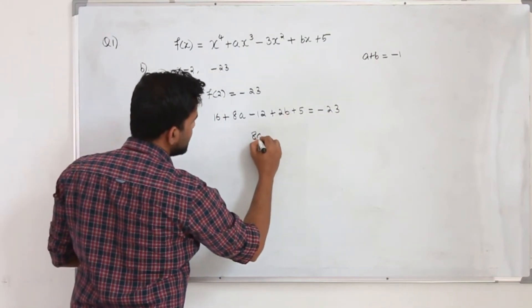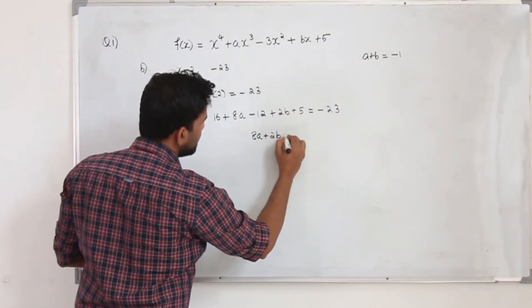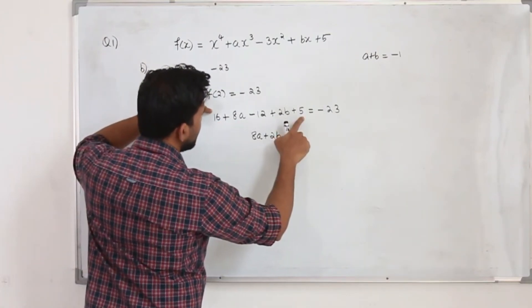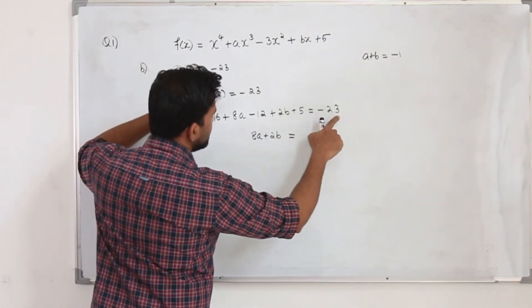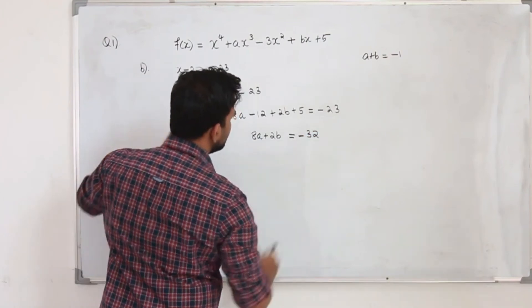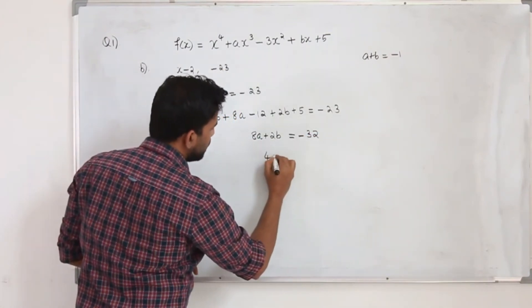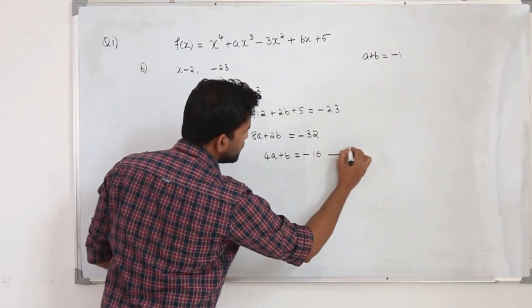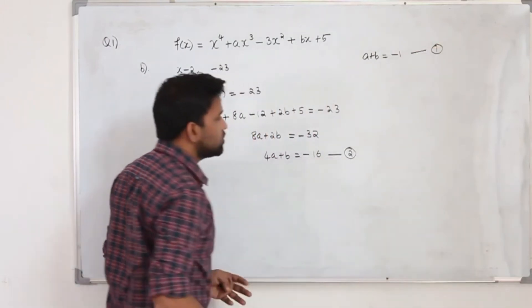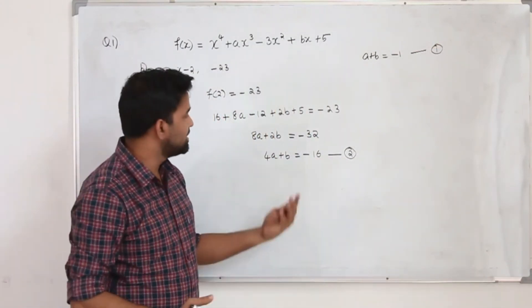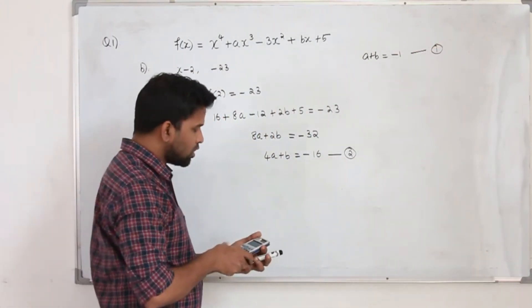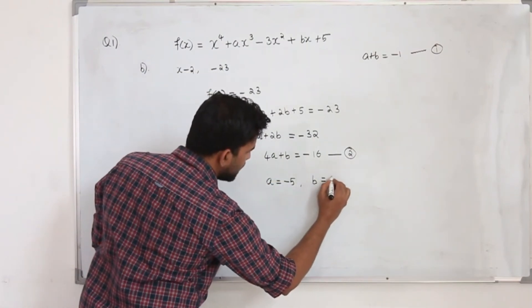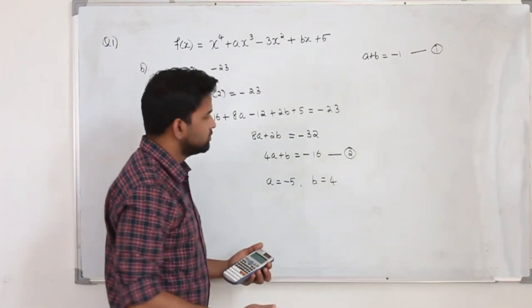Simplify this, we will get 8a plus 2b equals, we have 16 minus 12 is 4, plus 5 is 9. So minus 23 minus 9 is minus 32. So maybe you can divide everything by 2, 4a plus b equals minus 16. Take it as equation 2, this is our equation 1. Solve these two equations, you can easily get the value of a and b. So our a is minus 5, and b equals 4. That's it.